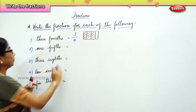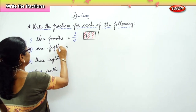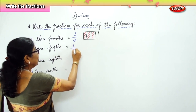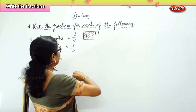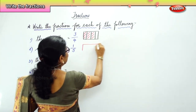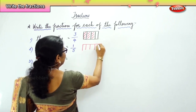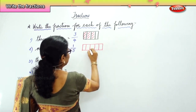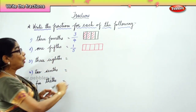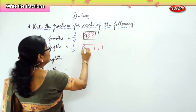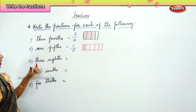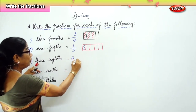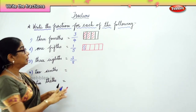The next one is one-fifth. We write it as one by five — numerator one, denominator five. Look at the picture: one, two, three, four, five. Only one part out of five is shaded. This is one-fifth. Next is three-eighths. We write three-eighths as three parts out of eight parts — three by eight.